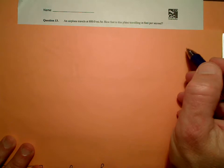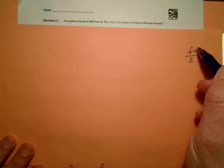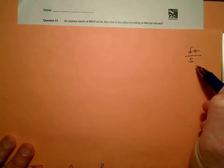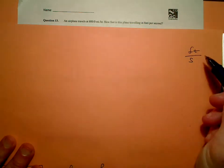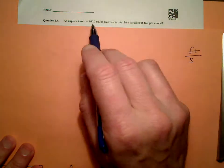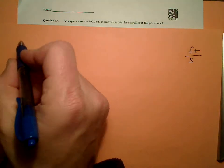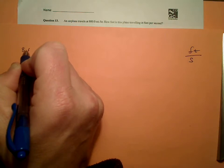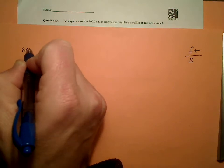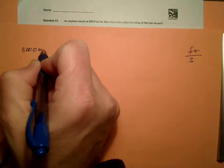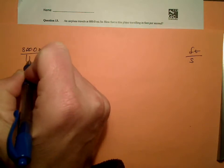So feet per second, we know the units of our answer are feet per second. Now, here we are doing our answer is something per something. So we are going to start with something per something. The only thing we really have here is 800 miles per hour. So I'm going to go ahead, 800.0 miles per one hour.